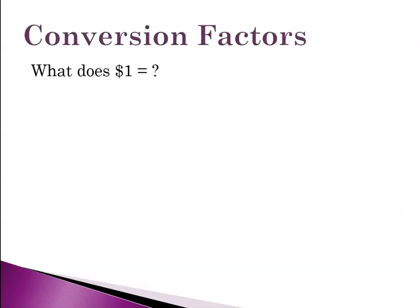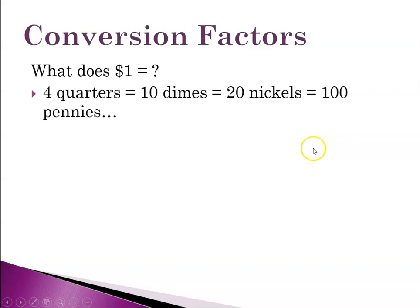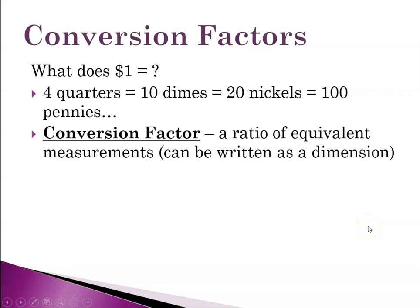So the conversion facts - what does one dollar equal? We know that there's a bunch of things we could say. We could say one dollar is the same as four quarters, or one dollar is 10 dimes, or 20 nickels, or 100 pennies. So the conversion factor is a ratio of equivalent measurements and we're writing them as a dimension. For instance, we could say one foot equals 12 inches and we could also say that 12 inches equals one foot.